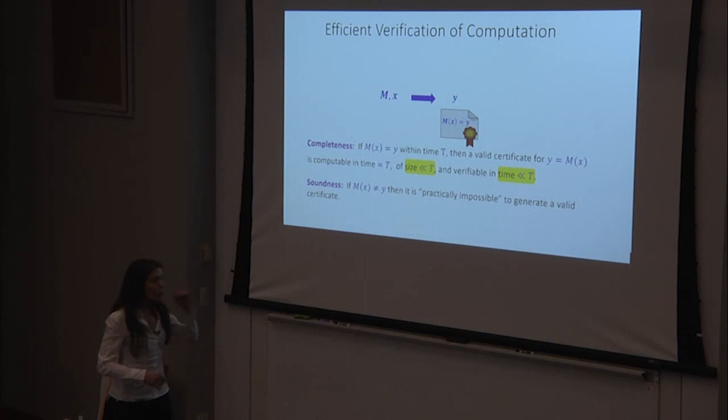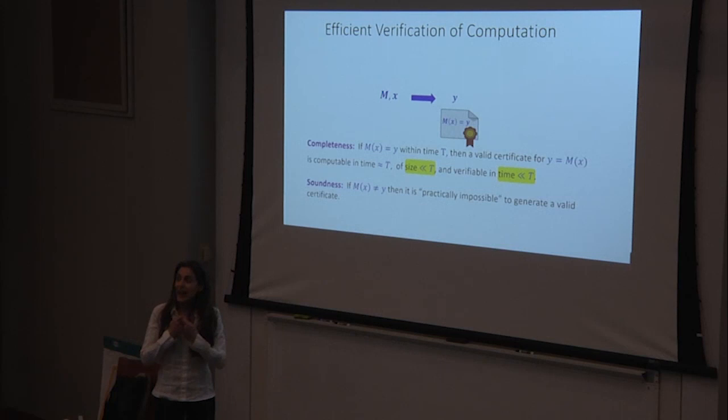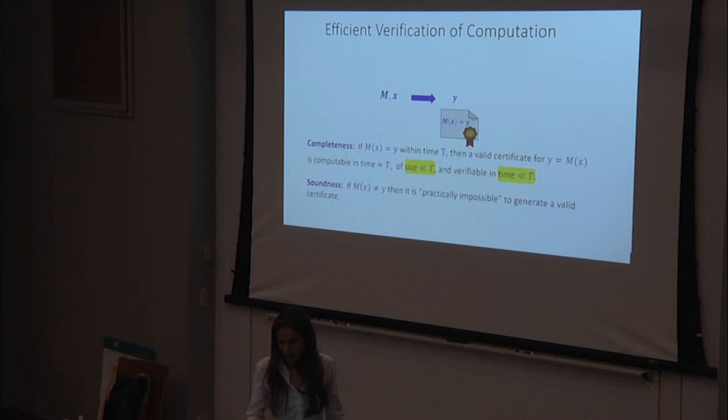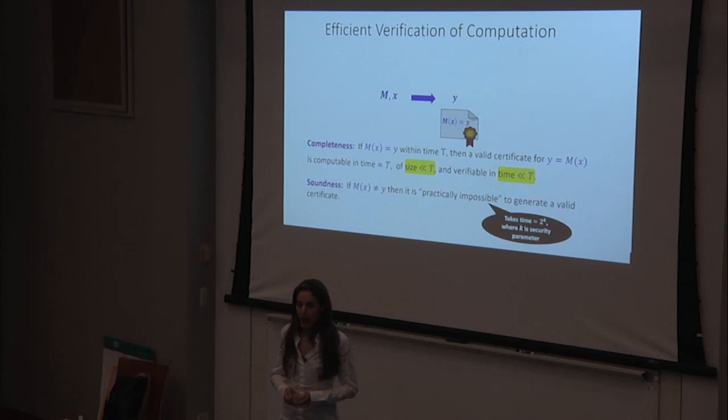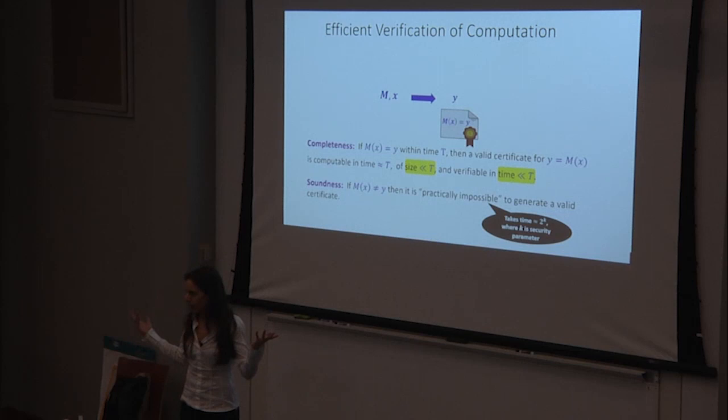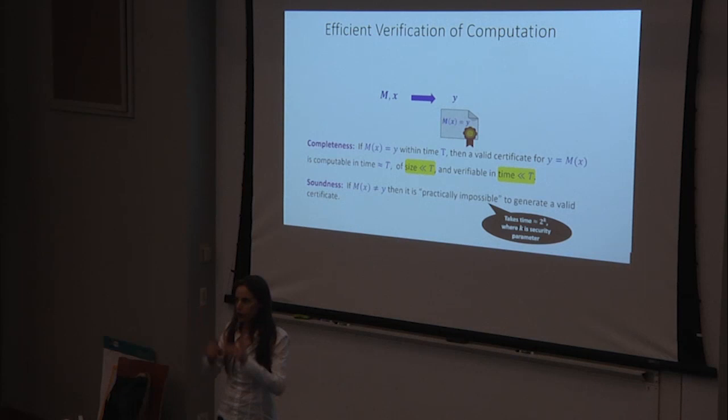The second property is soundness: if Y is the incorrect output, it should be practically infeasible to generate a valid certificate. By practically infeasible, we mean it would take time like two to the K, where the certificate size and verification time grow with the security parameter K.